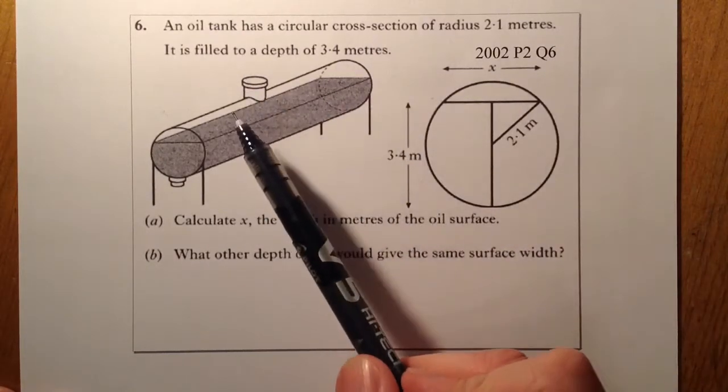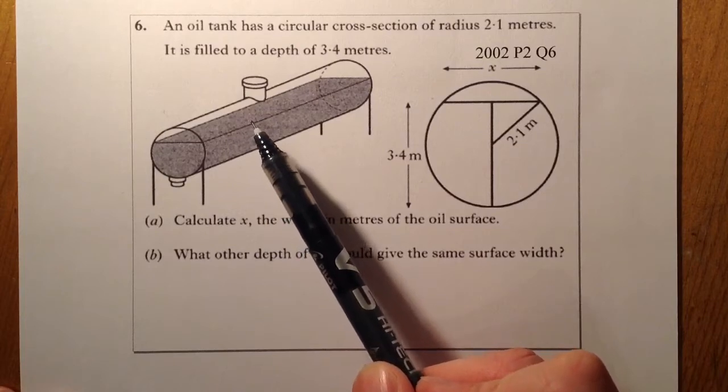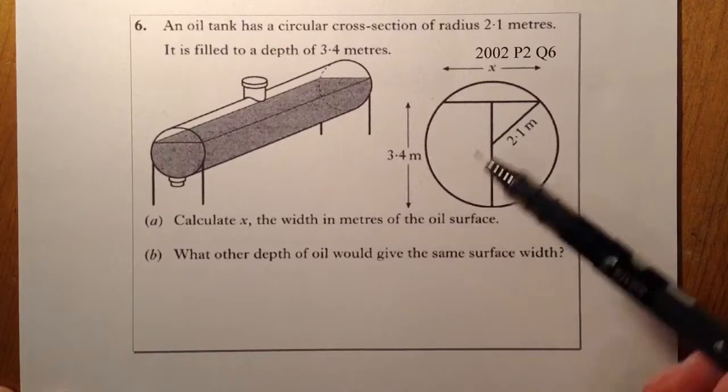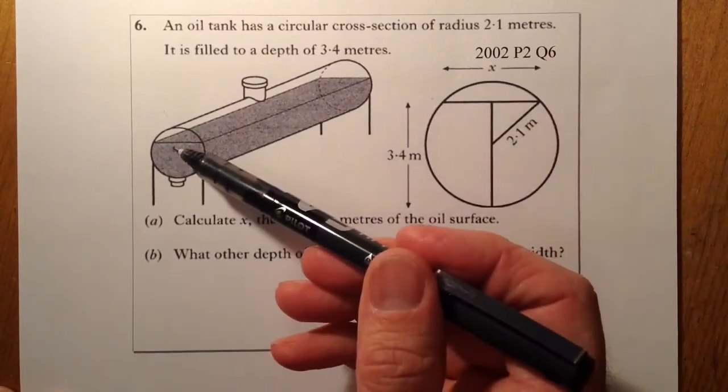What we have here is an oil tank that has a cross section of radius 2.1 metres. It's filled to a depth of 3.4 metres, so up to there.